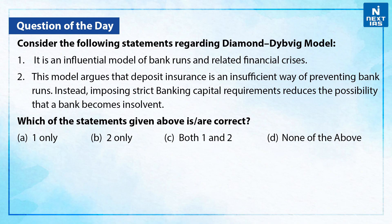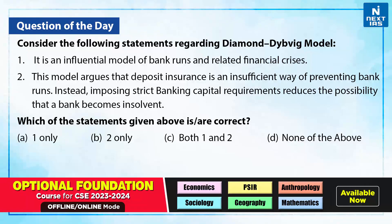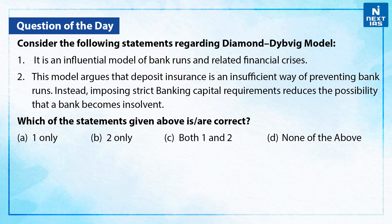Let us take up one practice question on the same. Consider the following statements regarding the Diamond-Dybvig model. First, it is an influential model of bank runs and related financial crisis. Second, this model argues that deposit insurance is an insufficient way of preventing bank runs; instead, imposing strict banking capital requirements reduces the possibility that a bank becomes insolvent. Now, which of the statements given above are correct? With respect to the Diamond-Dybvig model, only the first statement is correct. Hence, the correct answer is option A, that is, 1 only.